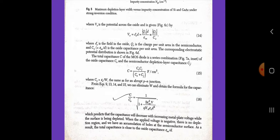We can eliminate W and obtain the formula for capacitance: C/C_0 equals one divided by square root of (1 plus 2 epsilon squared_ox divided by (qNa epsilon_s d squared) times V). This predicts that the capacitance will decrease with increasing metal plate voltage while the surface is being depleted. When the applied voltage is negative, there is no depletion region and we have an accumulation of holes at the semiconductor surface. As a result, the total capacitance is close to the oxide capacitance epsilon_ox divided by d.